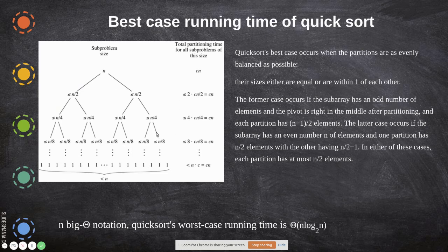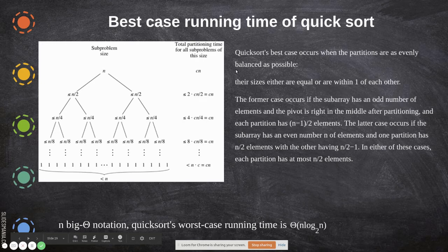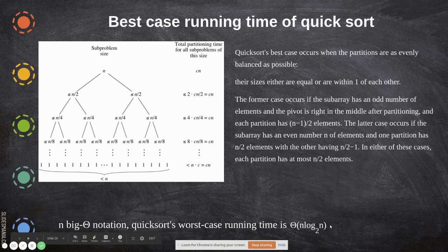The best case running time is similar to merge sort — if we select the pivot element correctly, the array will be equally divided. The best case occurs when the partitions are as evenly balanced as possible, similar to merge sort. Here also we will have the same running time. This is the best case and it is O(n log n).